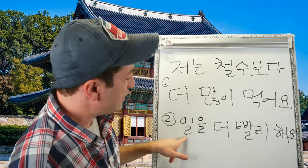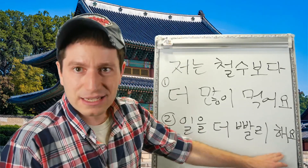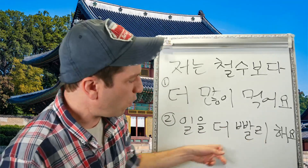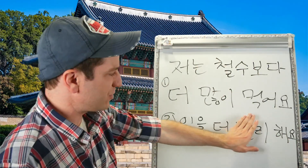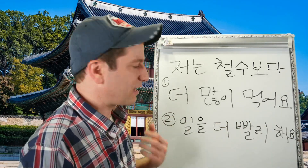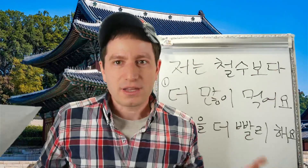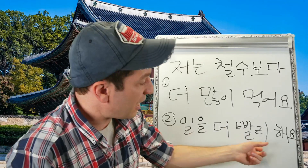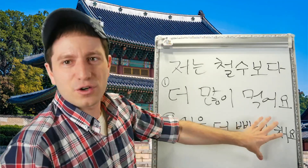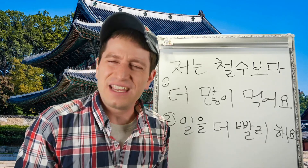Or: 저는 철수보다 일을 더 빨리 해요 — I work more quickly than 철수. 일하다 is 'to work,' so 일을 빨리 하다 is 'to work quickly,' and 더 빨리 해요 means 'I work more quickly.' You could also say 일을 더 많이 해요 — I do a lot more work than 철수; or 일을 더 잘 해요 — I do a better job with my work than 철수. Whatever adverb you put in will help clarify the meaning of 더, since just 더 or 덜 alone can often be vague with action verbs.